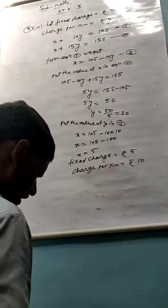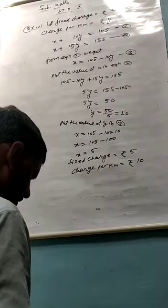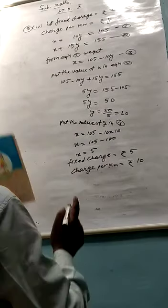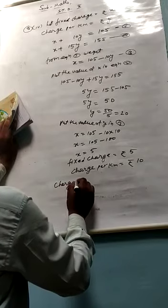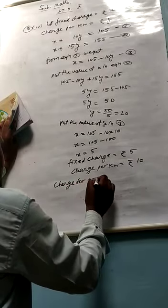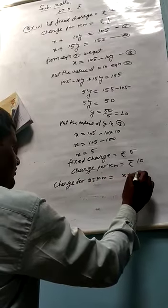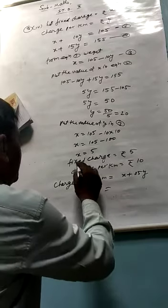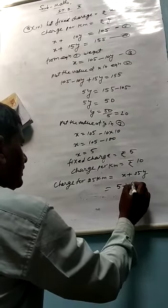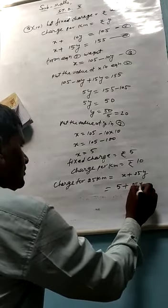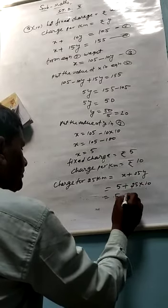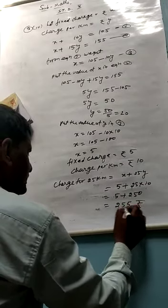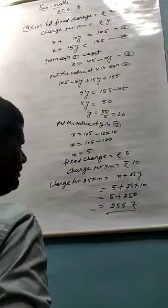Ab yeh question kahe raha hai, how much does a person have to pay for driving distance of 25 km? Charge for 25 km equals x plus 25y. x ki value kitni aayi hai? 5 plus 25 into y ki value 10, 5 plus 250 equals 255 rupees. Charge for 25 km rupees 255.